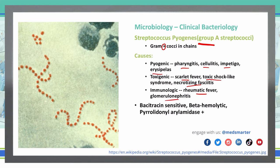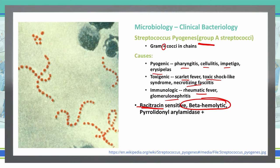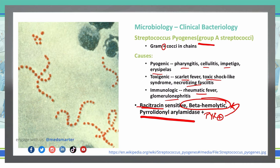Streptococcus pyogenes is sensitive to bacitracin, it is a beta-hemolytic bacteria, and it is pyrrolidonyl arylamidase (PYR) positive. PYR is typically used to distinguish between enterococcus and Group D strep, but Group A strep also shows this characteristic. The key point: if you see something that is PYR positive and beta-hemolytic, it has to be Strep pyogenes, or Group A strep.